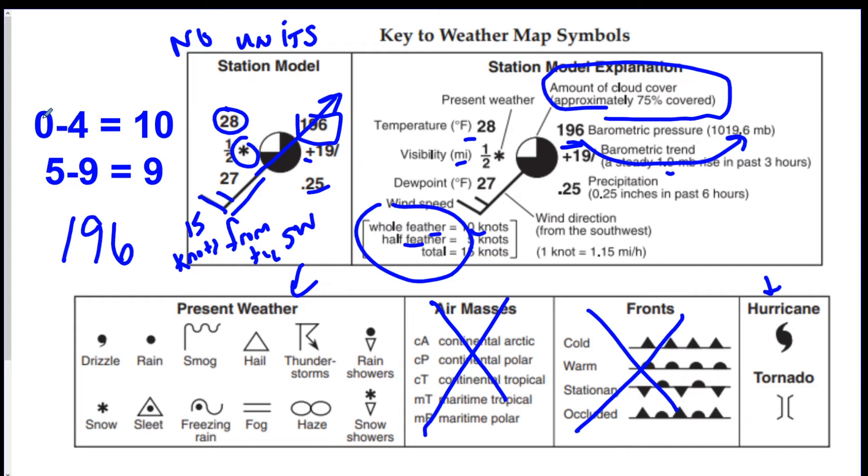And if the first number is between a five and a nine, you put a nine in front. So in this case it's a one. So I'm going to put a ten in front. And then you add the decimal point between the last two numbers. So one thousand and nineteen point six.